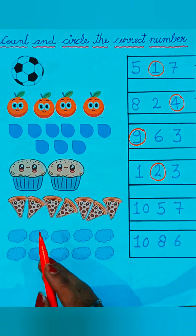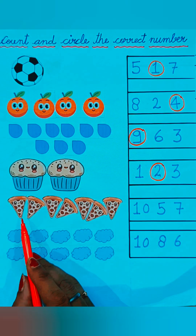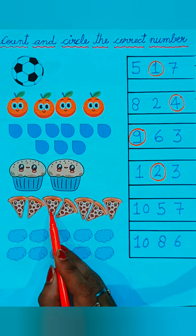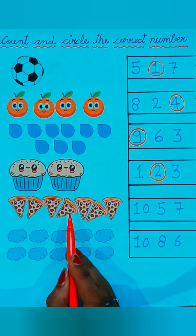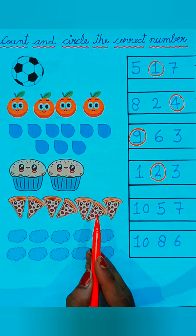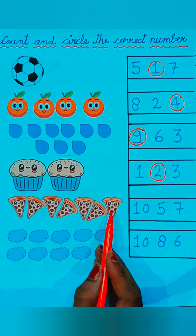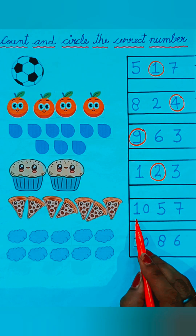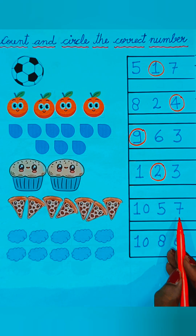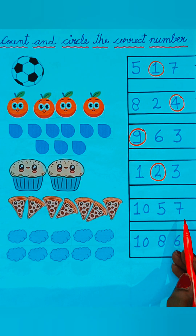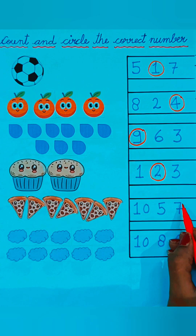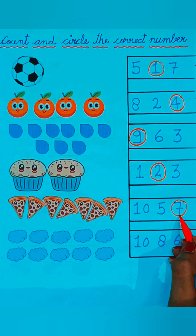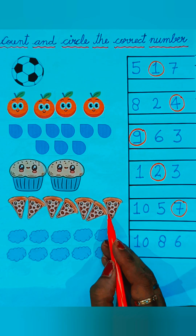Two cakes are given so we will circle on number two. Let's count the ice cream: one, two, three, four, five, six, and seven — seven ice creams are given here. Which is the correct number? Ten, five, four, seven — seven is the correct number, so we will circle on number seven because seven ice creams are given here.